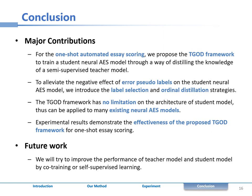In this work, we aim to perform essay scoring under one-shot setting and propose the TGOD framework. The TGOD framework has no limitation on the architecture of the student model, thus can be applied to many existing neural AES models. Experimental results demonstrate the effectiveness of the proposed TGOD framework for one-shot essay scoring.